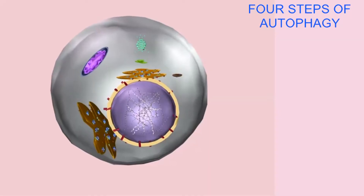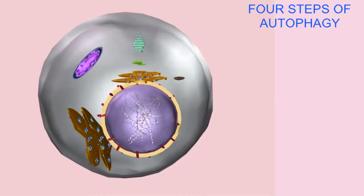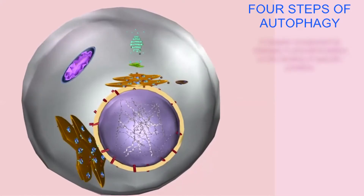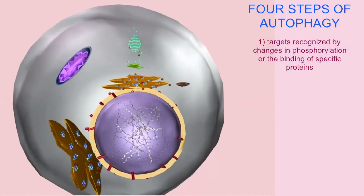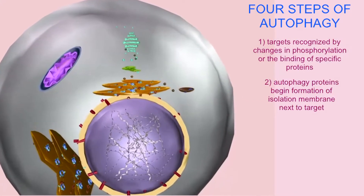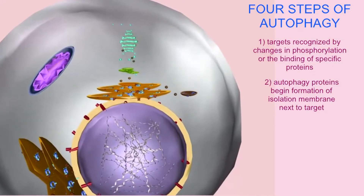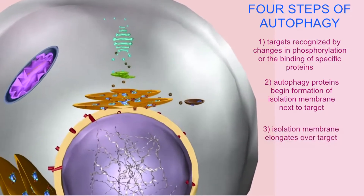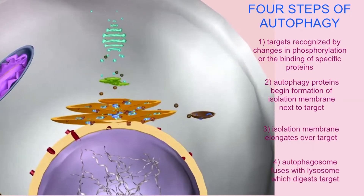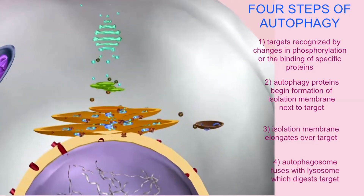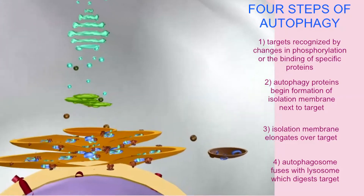These vesicles and autophagy typically occur through a series of four steps. First, specific organelles or proteins are targeted for destruction because of changes in their level of phosphorylation. Second, autophagy proteins start to form an isolation membrane in the vicinity of the targeted structure.